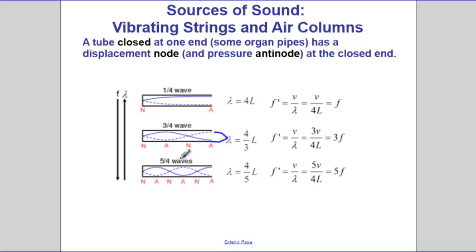And in the case of the third tube, you have five fourths of the waves. So the wavelength would be four fifths of the length of the tube.